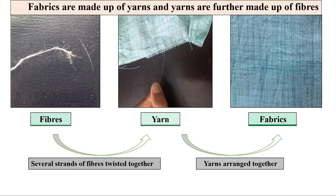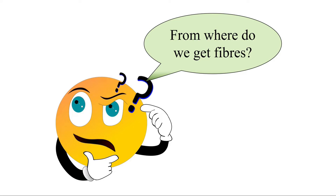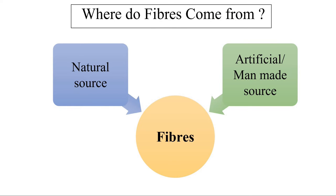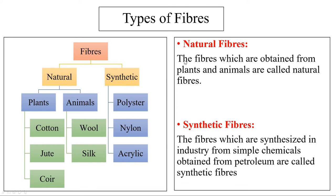Now, where do we get fibers from? We get fibers from two sources: natural sources and artificial or man-made sources. The fibers obtained from plants and animals are called natural fibers. From plants we obtain cotton, jute, and coir — coir is obtained from coconut husk. From animals we get wool and silk fibers.